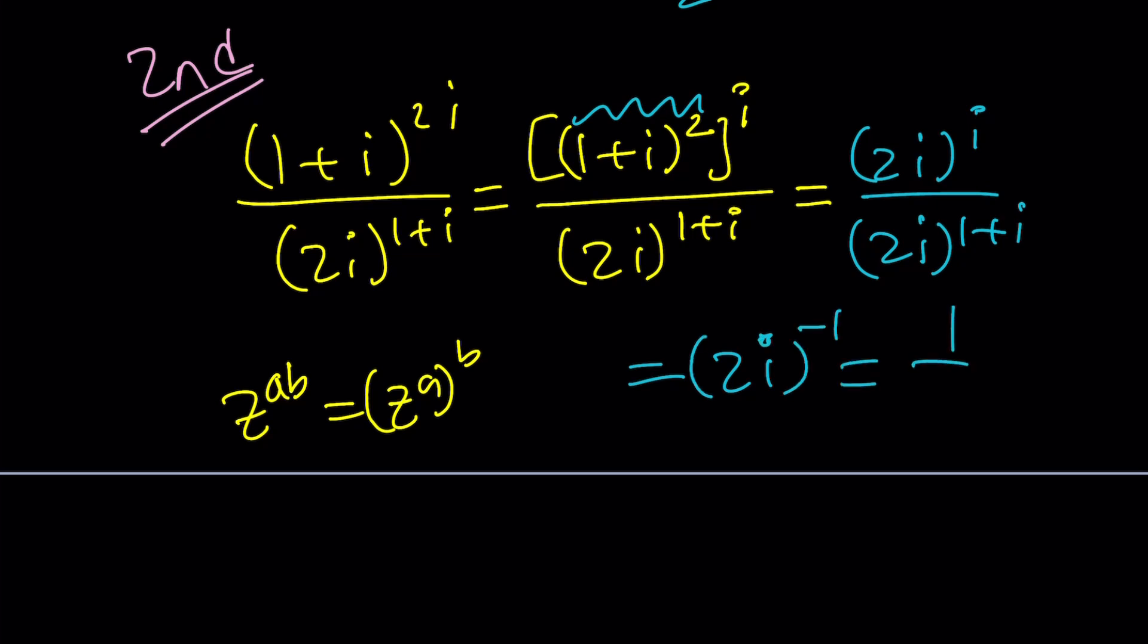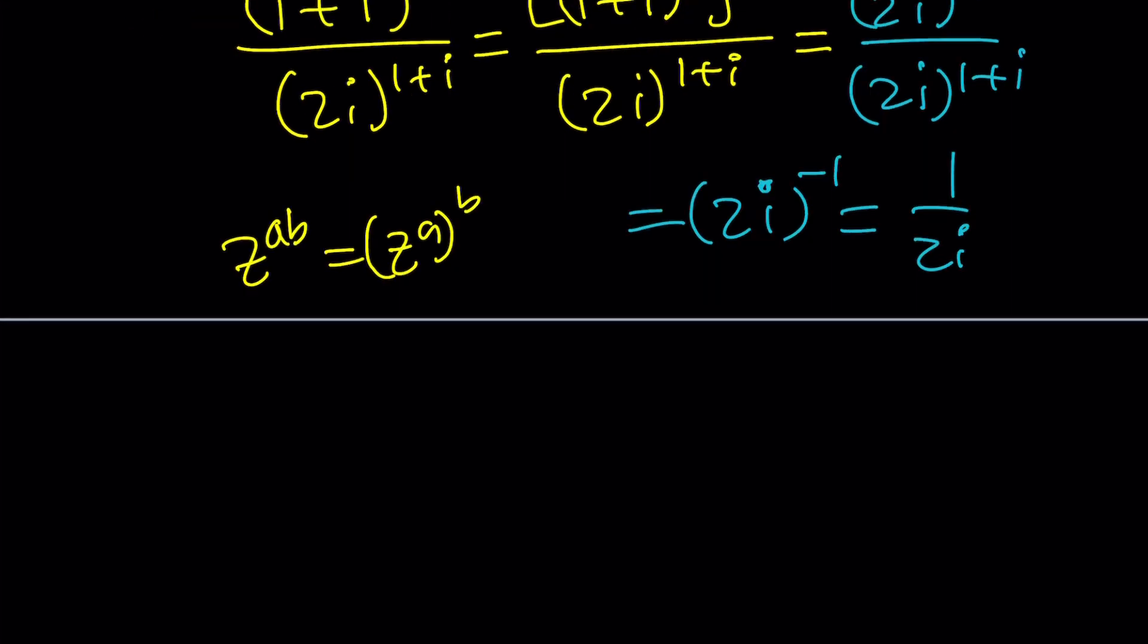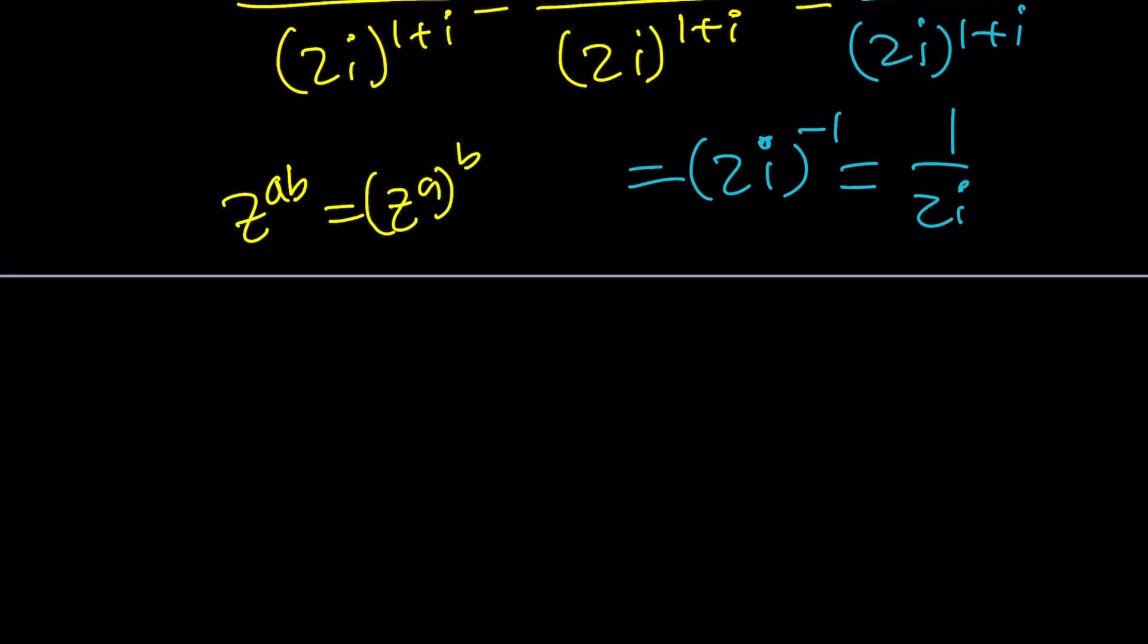And that just means 1 over 2i. You have to flip the whole thing. And 1 over 2i can be simplified. Just multiply by negative i. You're going to get negative i squared is 1, so this is going to give you a 2. Negative i over 2. Yay, we got the same thing. Beautiful. And this brings us to the end of this video.